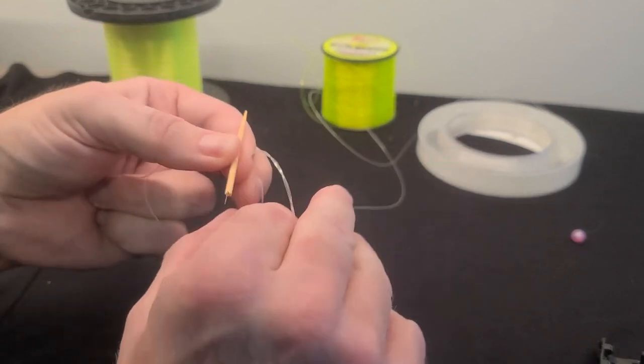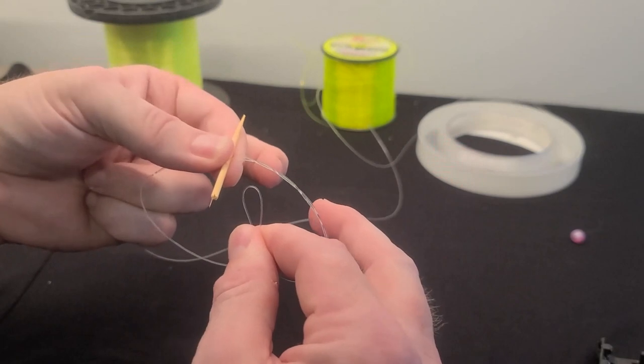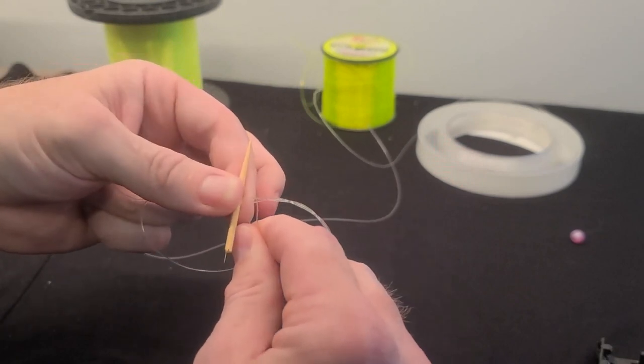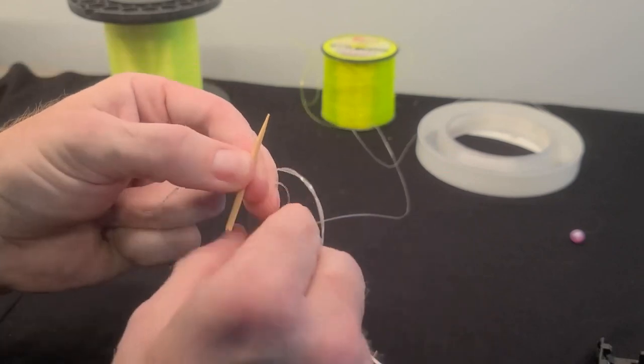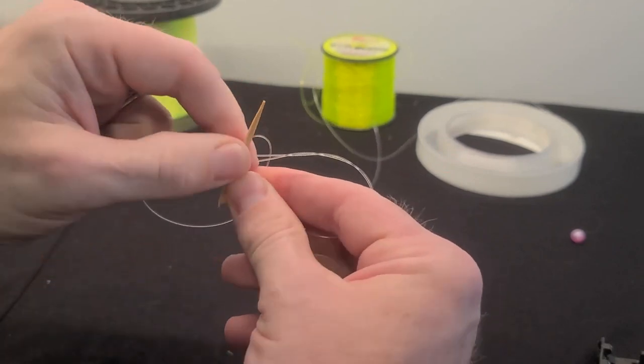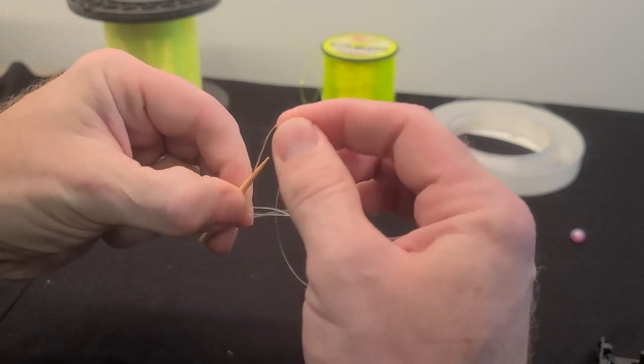So now you have that toothpick in there with a loop. You come down to the bottom of your loop and take the line and make another loop. Just pinch it together, slide it through the hole, and pull it all the way through.